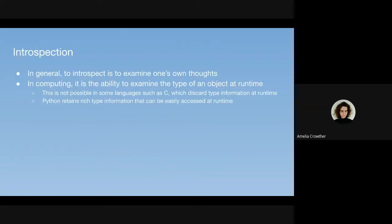Introspection in general is to turn your thoughts inward, to examine your own thoughts, but in computing it has a more specific meaning: the ability to examine the type of an object at runtime. This isn't possible in older languages such as C, particularly compiled languages, because they usually discard type information at runtime. Python, however, is a dynamic language which retains a lot of typing information through to runtime, which can be easily accessed if you want to know more about the type of an object.